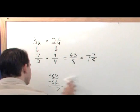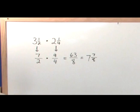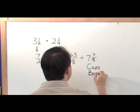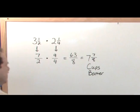So let me make sure you understand what we did. The answer is seven and seven-eighths cups of batter. That is how much batter we need to make two and a quarter cakes.